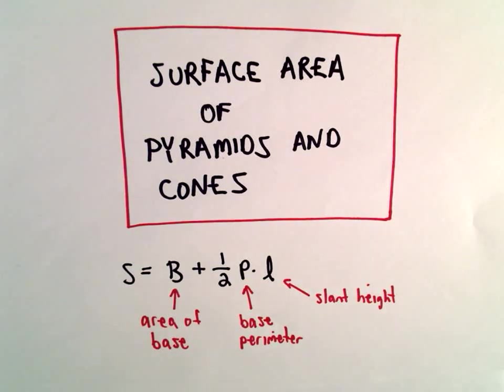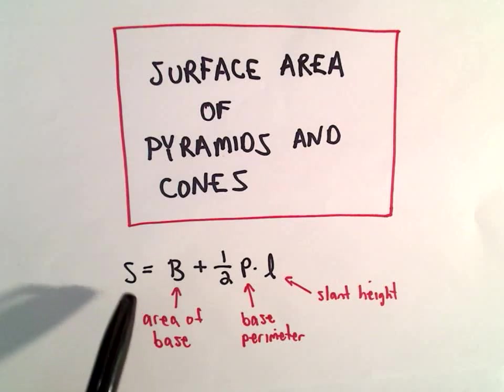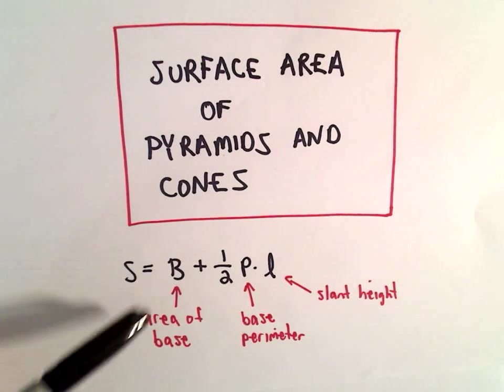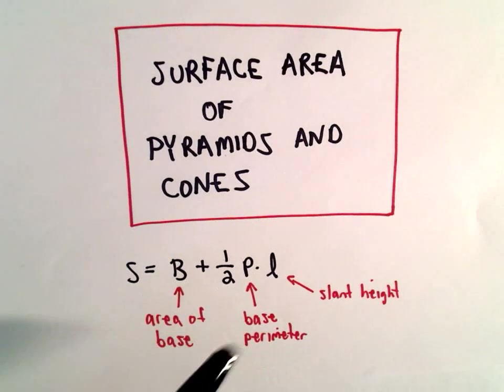Here we're going to look at finding the surface area of a pyramid or a cone. The formula is S equals B plus one-half P times L, where B is the area of the base, P is the perimeter of the base, and L is the slant height.